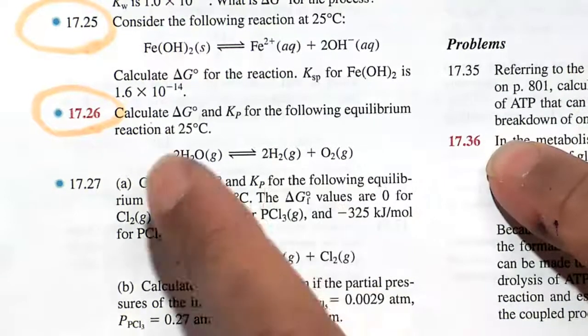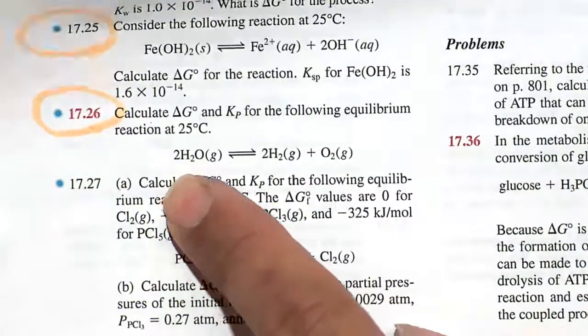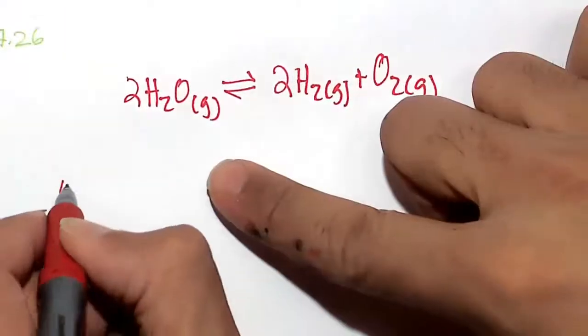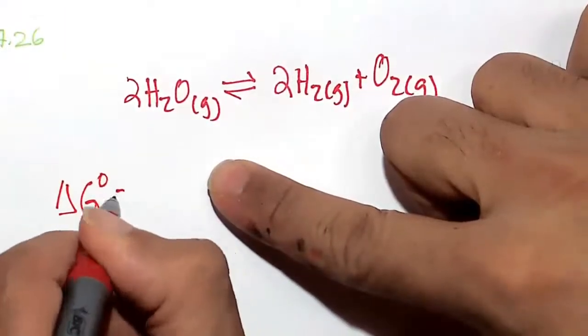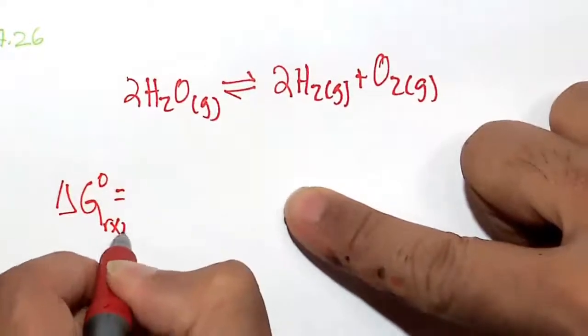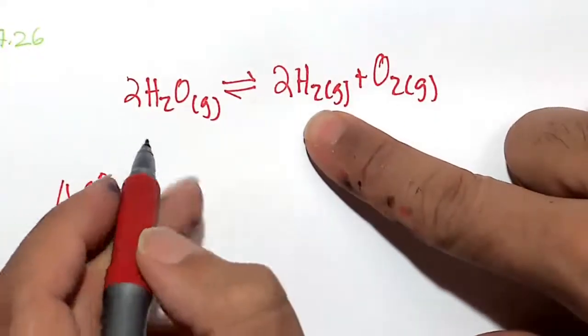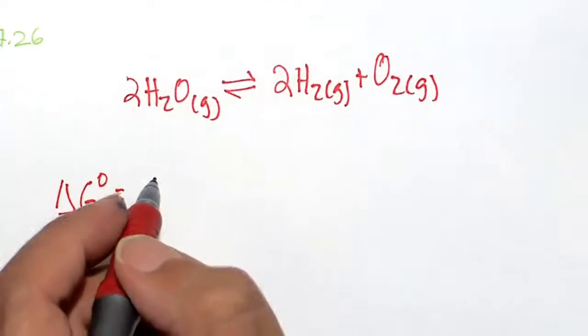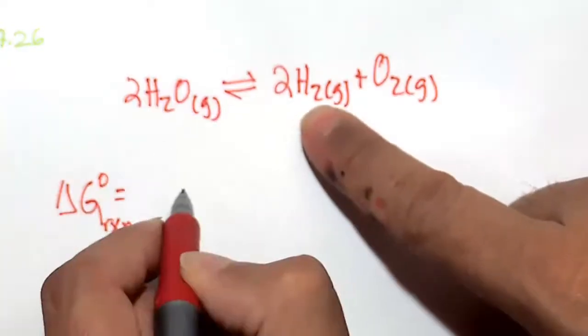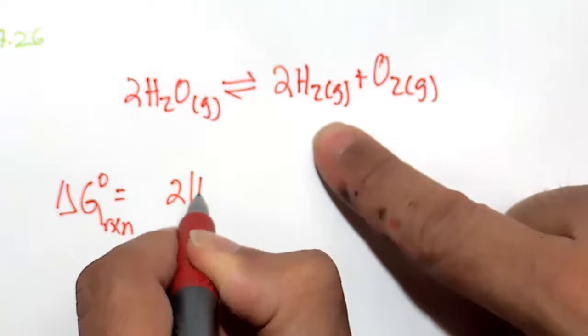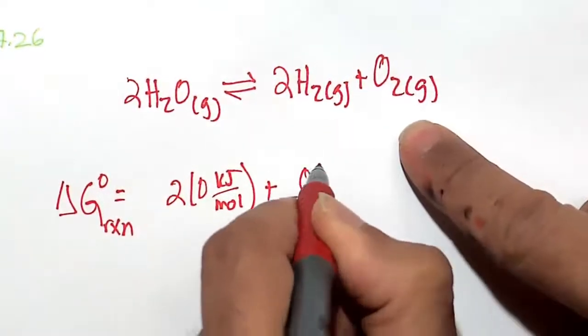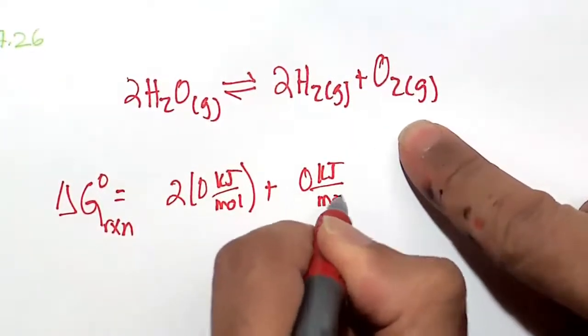Sum of the products minus sum of the reactants. We'll figure out the delta G at standard state here. This equation is balanced. So sum of the products: hydrogen, looking that up in the table, that's actually zero, so that's the base element, plus oxygen is zero, that's the base element for oxygen, O2 gas.